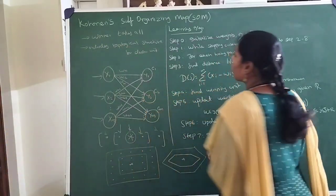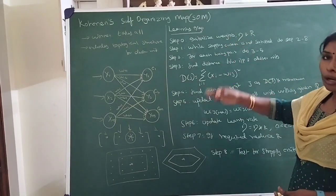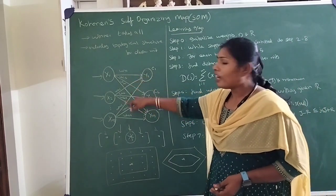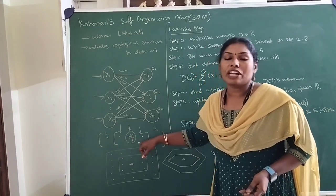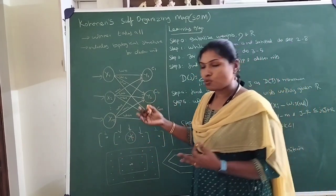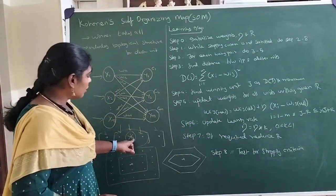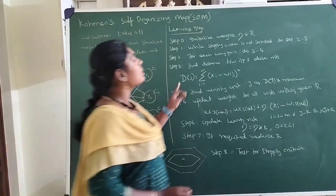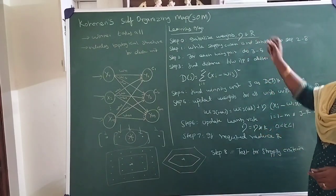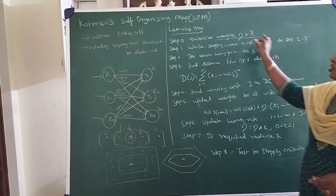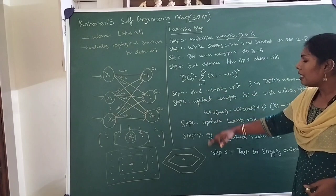This is the algorithm for the self-organizing map. First, initialization — we have a lot of things to be initialized: all the weight vectors, a learning rate, and we have to fix the radius of the clusters that we are going to update. For example, if I fix my radius as 1, I take all clusters nearby that unit to be updated. All the weight vectors, the learning rate, and the radius will be initialized. Then we check for the stopping criteria — this is where the algorithm starts.